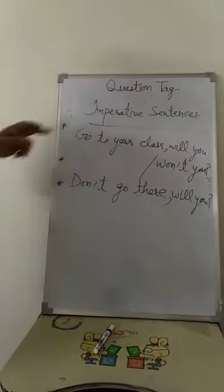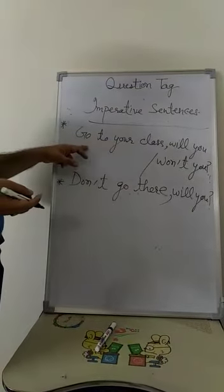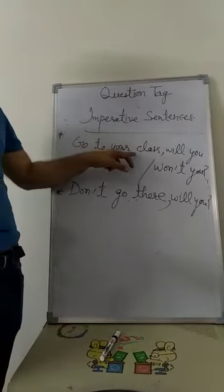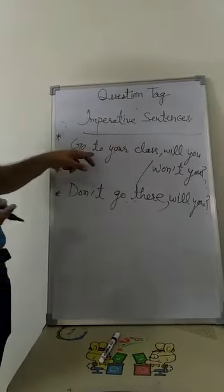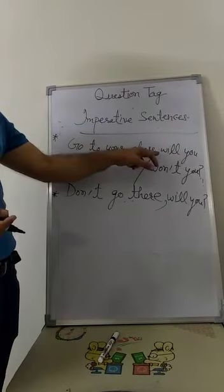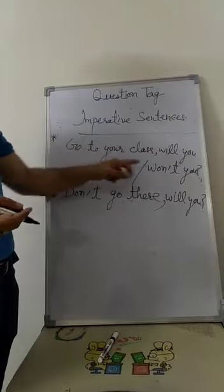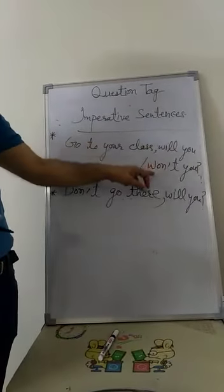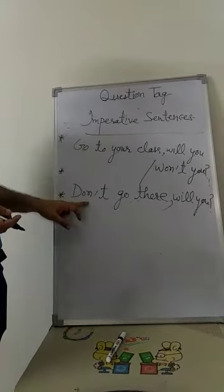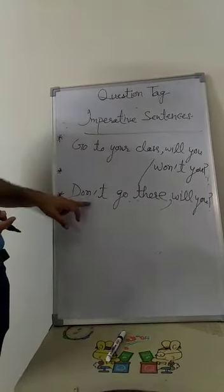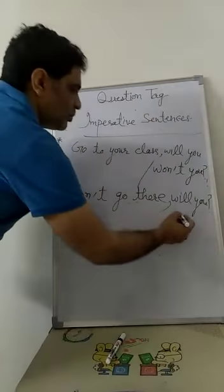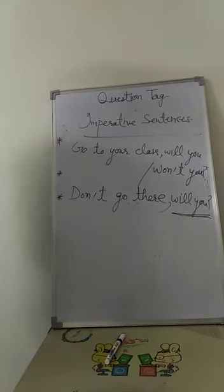Now let's have another example. Here we have taken two examples. The first example is here: Go to your class. This is a positive imperative sentence. So in case of positive imperative sentence, we can have both ways - 'will you' or 'won't you'. A question tag may be positive or may be negative. But here the example is of negative imperative sentence. So if negative imperative sentence is there, we will have a positive question tag. So is it clear to you?